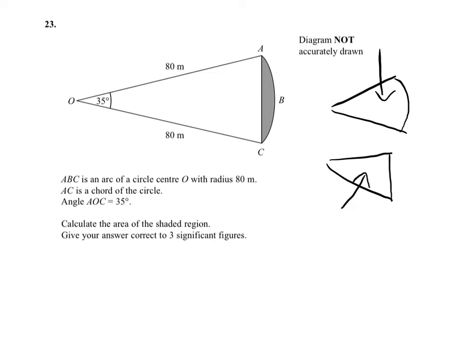The sector is a fraction of a full circle, and the fraction it is of the full circle is 335 out of 360, times the full circle. Now the radius is 80, so it's π times 80 squared. And that will give us the area of the sector.